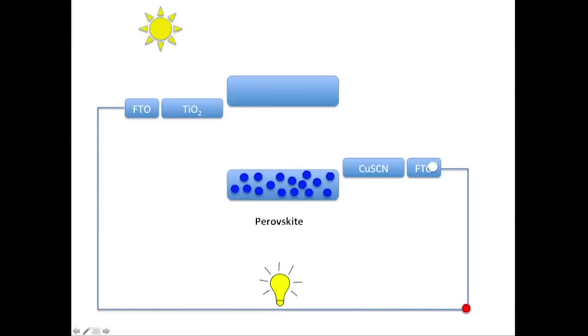Once we have electrons on the anode and holes on the cathode, we can hook it up to power an external device like an LED.